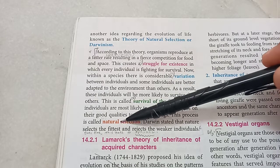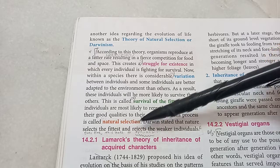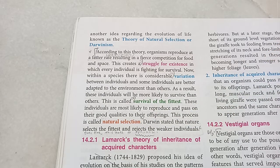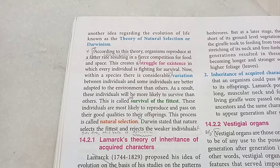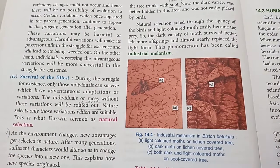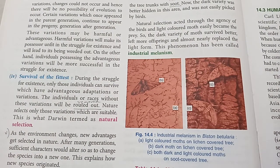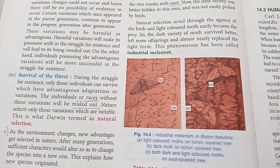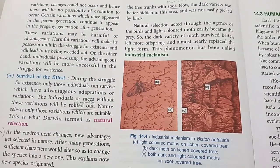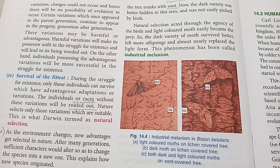Over time, these small changes lead to speciation — that is, a new species is created. Let's take a couple of examples to understand this. What do you mean by natural selection? Here, we see industrial melanism. Centuries ago, in the Manchester area of UK, there were two kinds of moths — the light-colored one and the dark-colored one.